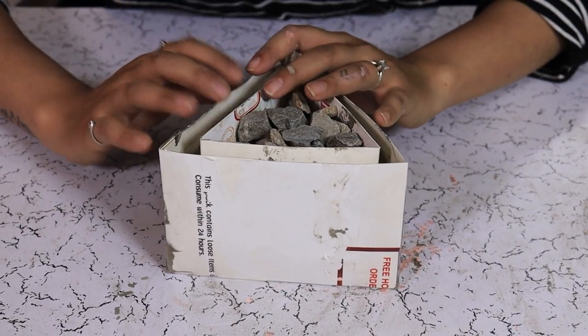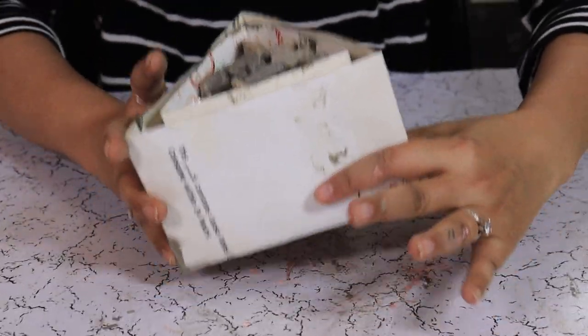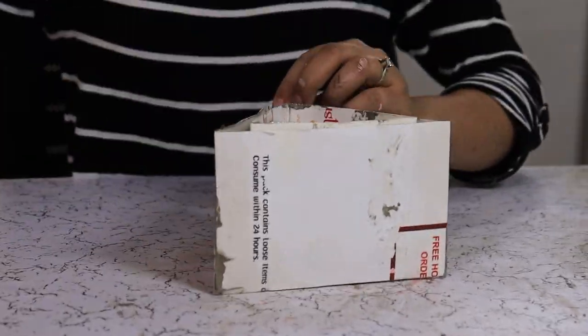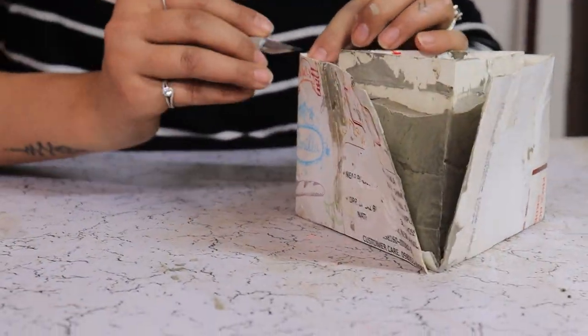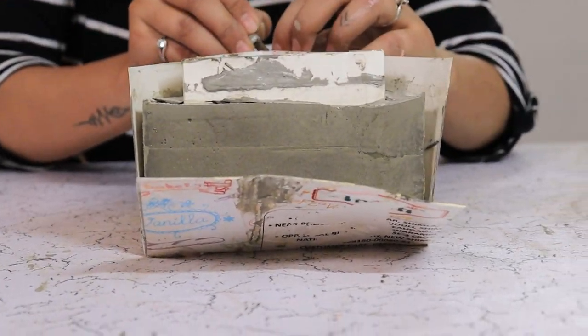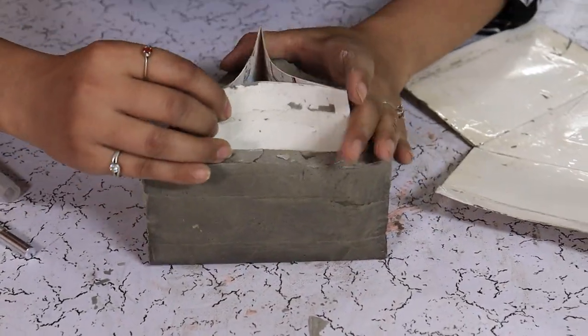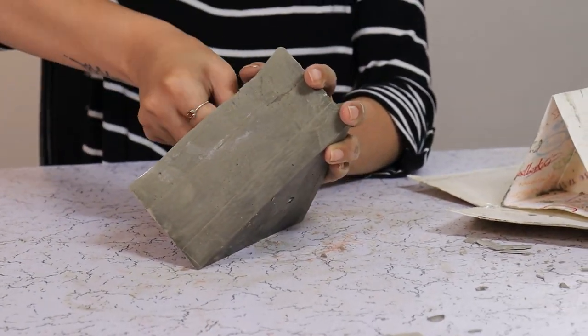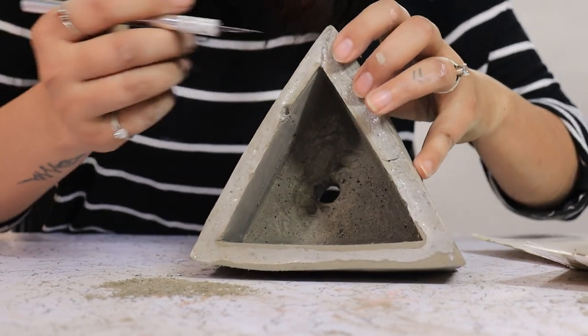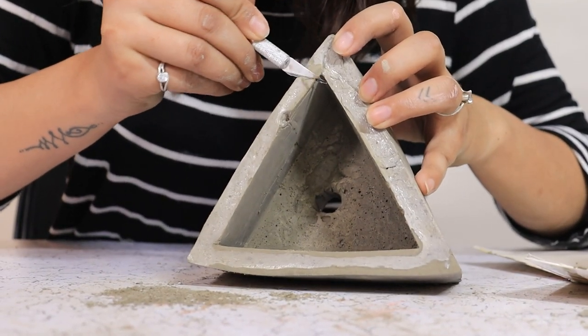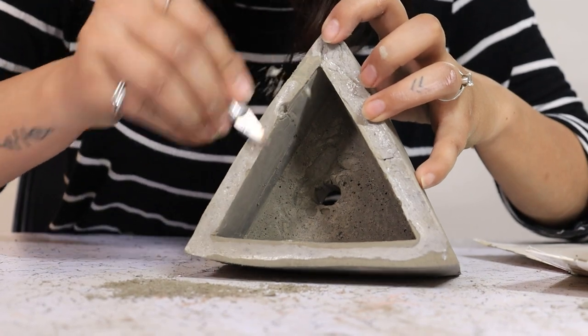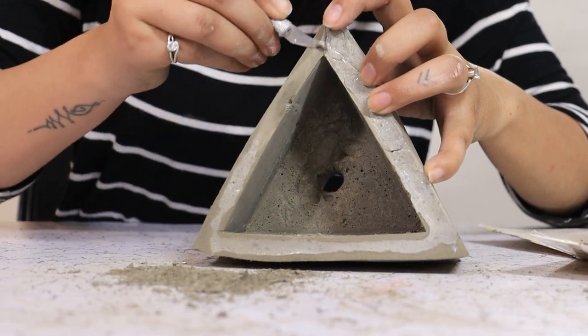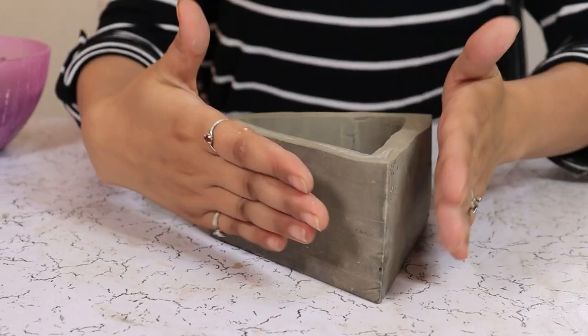Now that our planter is dried up let's take it out. First we are going to dump the pebbles. Now we are going to add a drainage hole. Smooth the edges with a knife or cutter. Our planter is nice and ready.